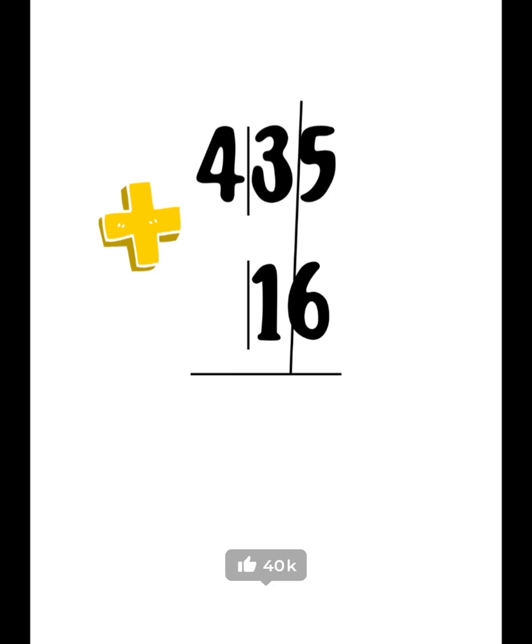So a 3-digit number means how many places are there? Hundreds, tens, and ones.